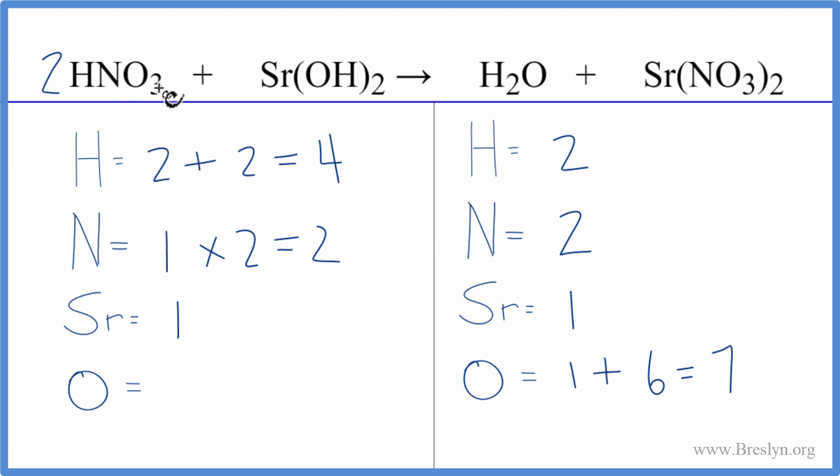And then oxygens, three times two is six, plus two times the one there. That gives us eight oxygen atoms. Well, let's balance the hydrogens. That often will end up balancing the oxygens for us.